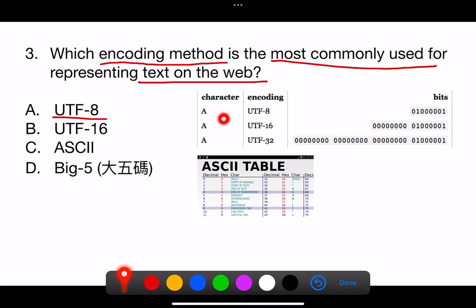It encodes each character in 1-4 bytes, depending on the character's complexity. It's efficient for storing text that includes a mix of different scripts and is backward-compatible with ASCII, making it ideal for the Internet's diverse and multilingual content.